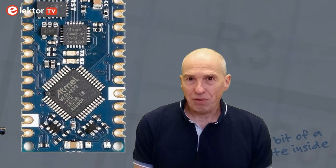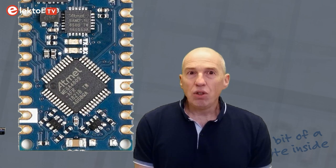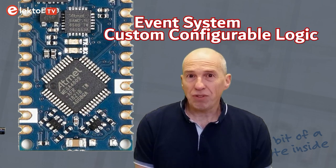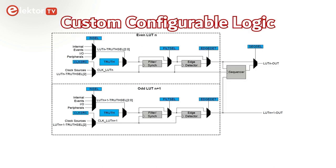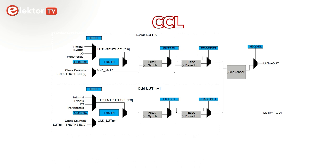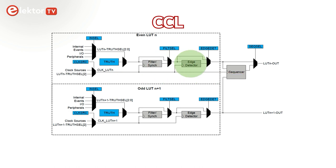Furthermore, the ATmega4809 on the Nano Every has some peripherals that are not available on the Uno at all, like an event system and a custom configurable logic block. The event system lets peripherals send signals to each other without needing the CPU to get involved. This allows for faster and more predictable response without calling interrupt service routines. The custom configurable logic, or CCL, is a kind of micro FPGA consisting of 4 lookup tables, or LUTs, with 3 inputs each. Each LUT has a glitch filter and an edge detector, and 2 LUTs together can drive a flip-flop.